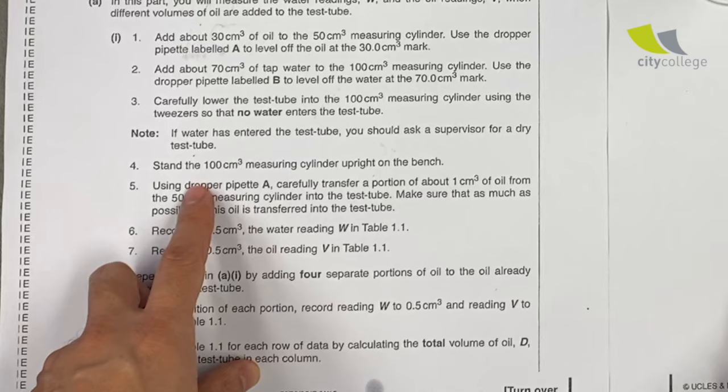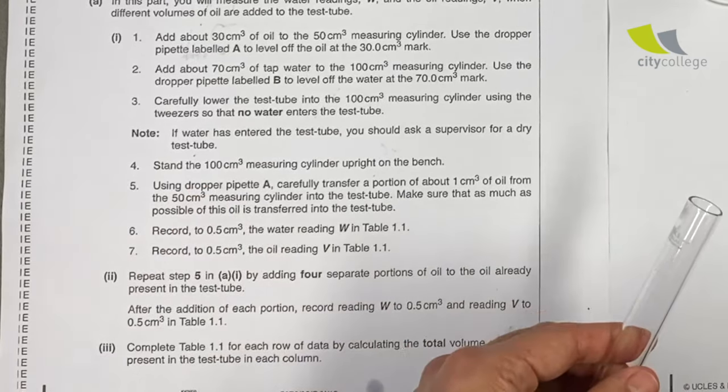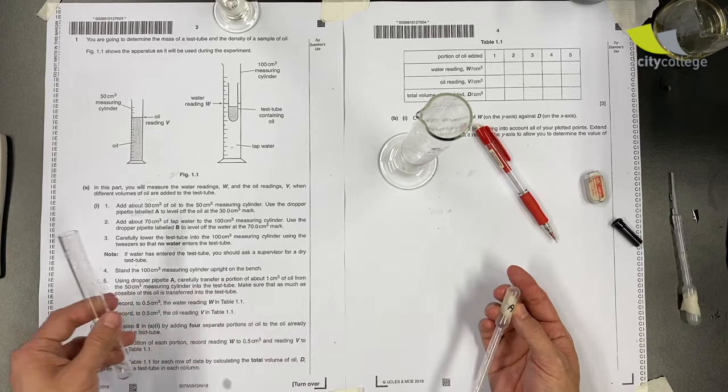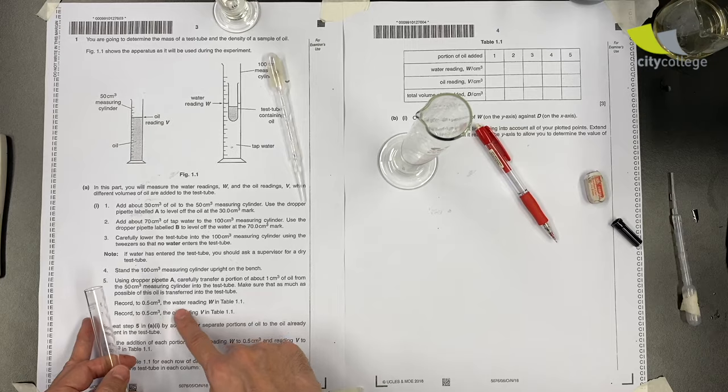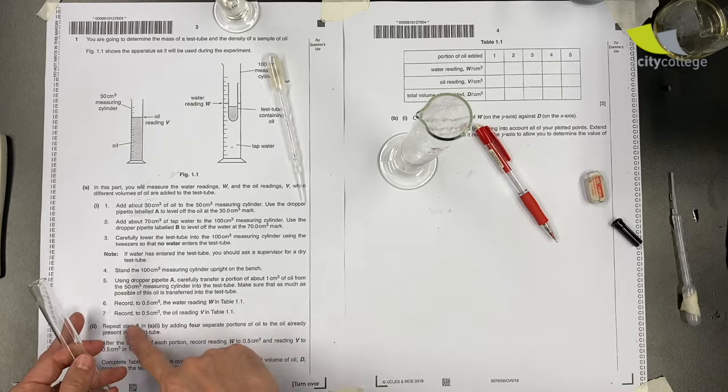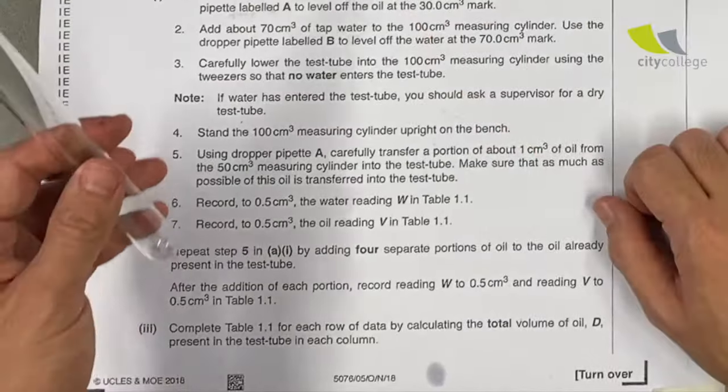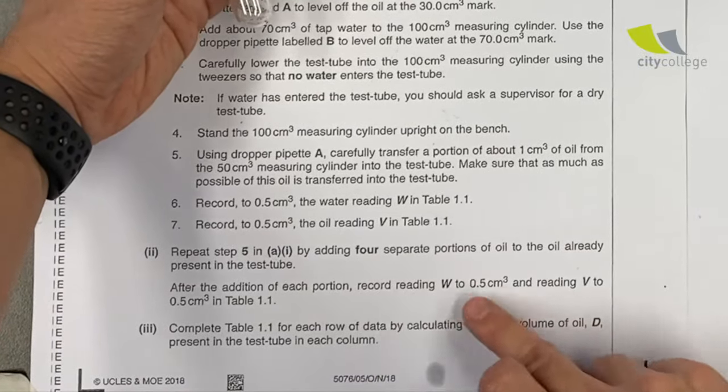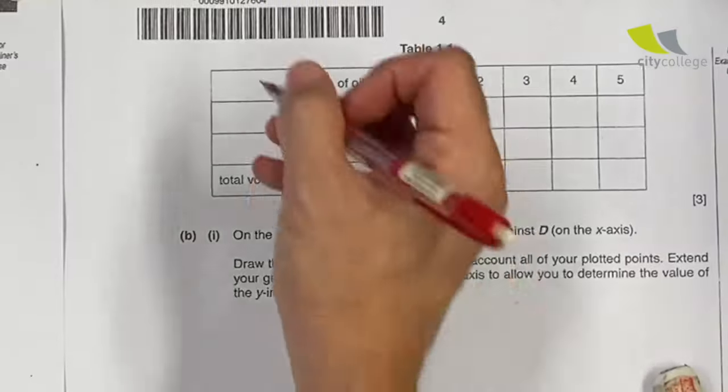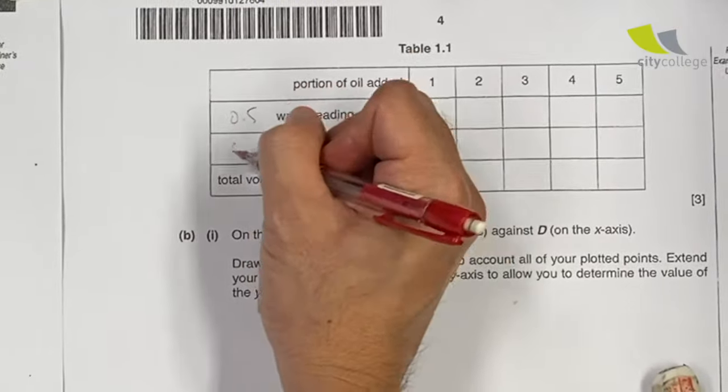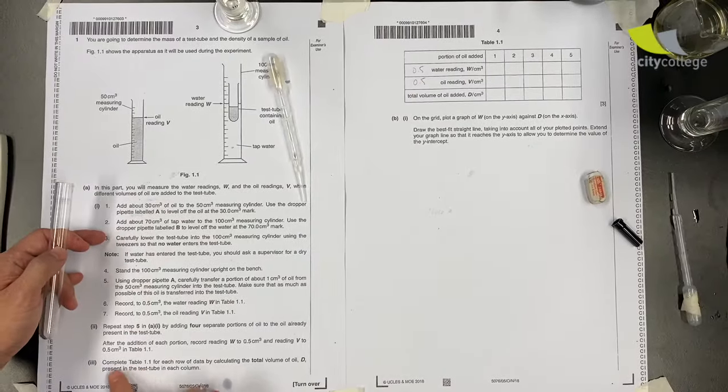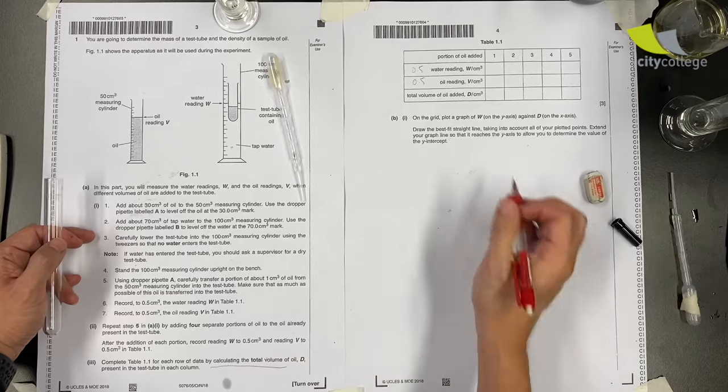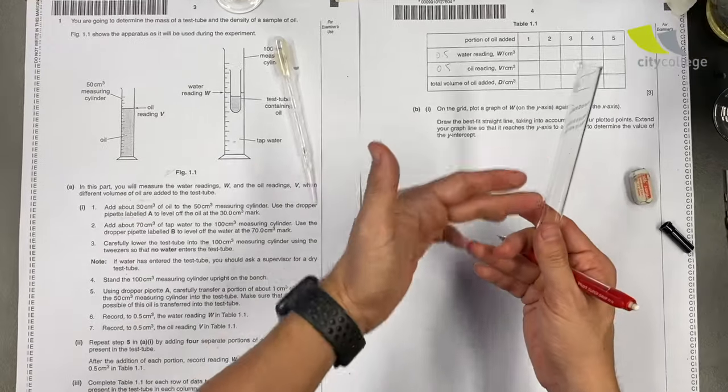Then I'm going to use dropper pipette A to transfer oil from measuring cylinder to test tube. Record water reading, which will go up. Record oil reading, which will go down. Repeat steps by having four portions of oil. Record reading to 0.5, which is also one decimal place. Complete table 1.1 for each row of data by calculating the total volume of oil.